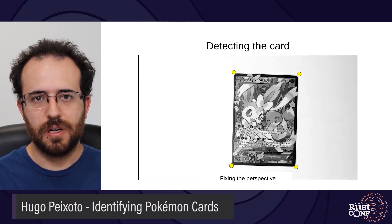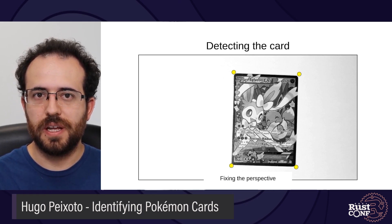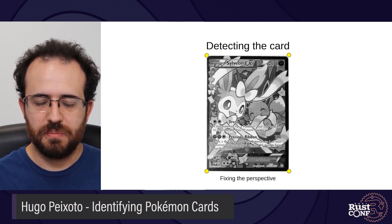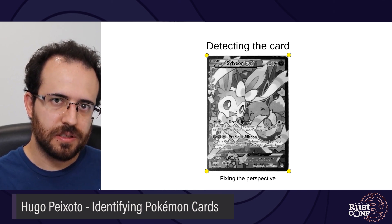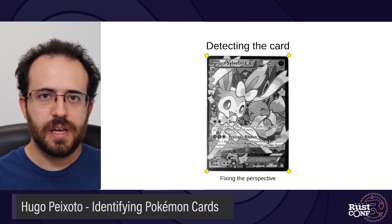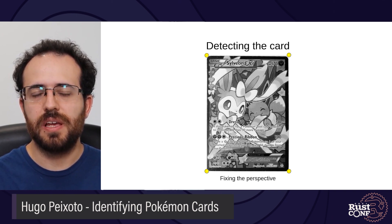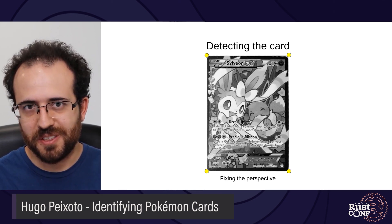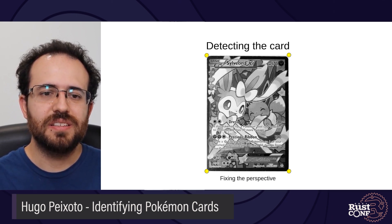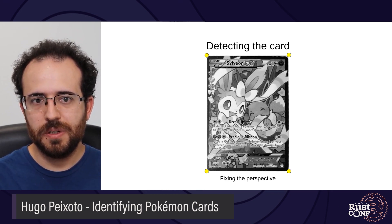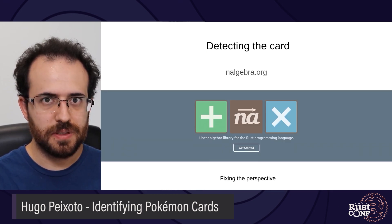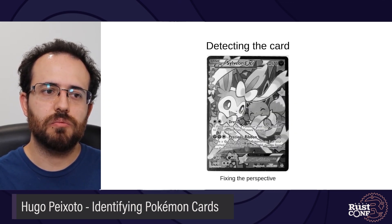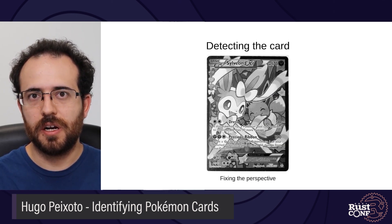Now that we have the corners of the card, we can work on fixing the perspective to get something like this. This transformation is done, roughly speaking, by taking each pixel and moving it to another coordinate. This movement is done by multiplying each pixel's coordinate by a matrix obtained by solving a system of equations based on those four corners. To do this, I used a crate called N-algebra, which implements a bunch of linear algebra algorithms. Doing that, we finally got what we wanted: our 2D card image.